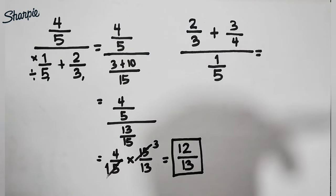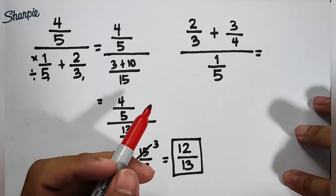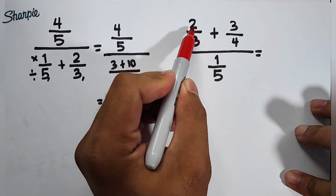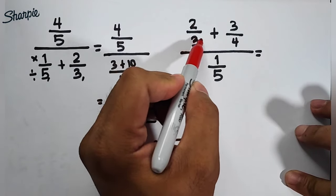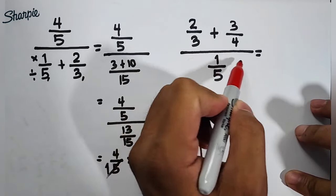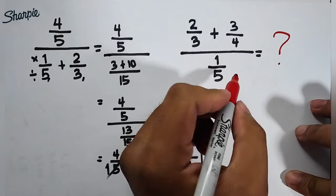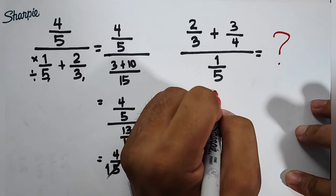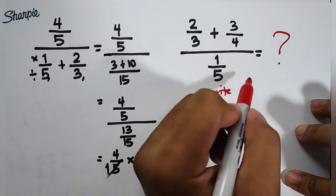Now, since I am done discussing item number 1 and number 2, I will give you a task, wherein you will try to answer this problem. What is 2 over 3 plus 3 over 4 all over 1 over 5? Give me your answer in a comment section.